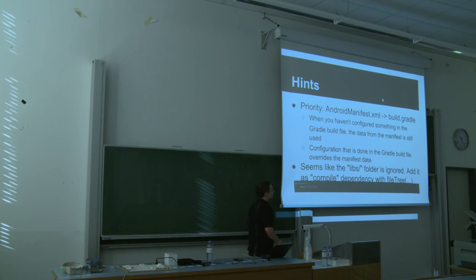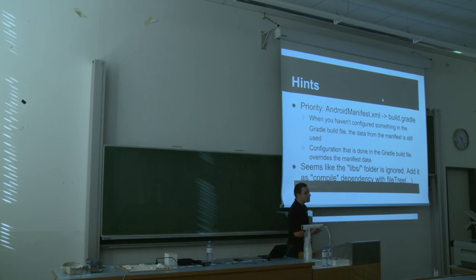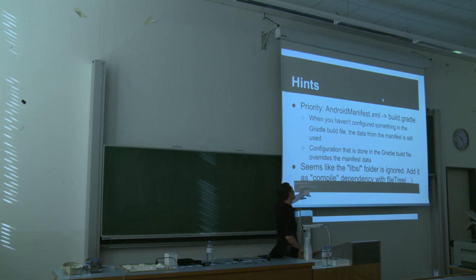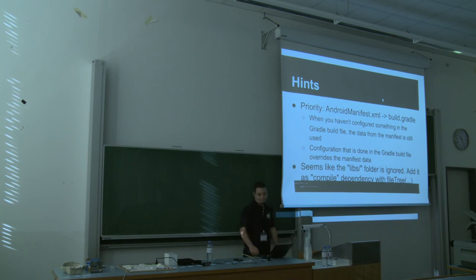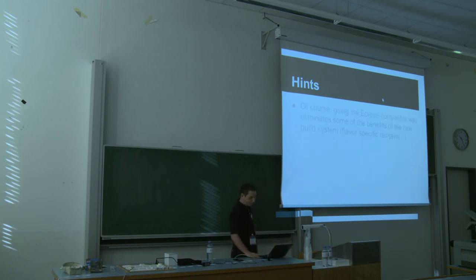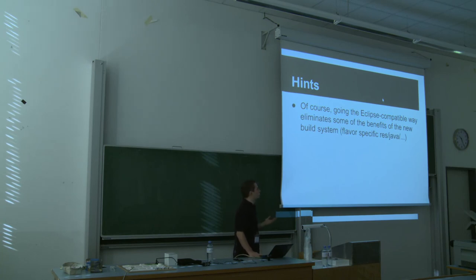One thing to be aware of: the 'libs' folder is not automatically included in your build, and you have to tell Gradle that your local JAR files lie in the libs folder. You do it with a compile dependency — use 'fileTree', specify the libs folder, and include everything that is '.jar'. While using the Eclipse-compatible way, you will lose some of the benefits that the Gradle build system gives you, like flavors for example.